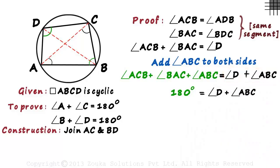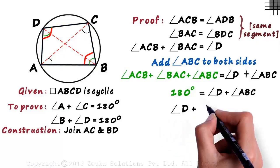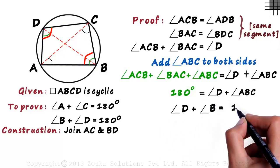We're almost there. Angle ABC is actually angle B of the quadrilateral. So we can say that angle D plus angle B equal to 180 degrees. So we proved one part.